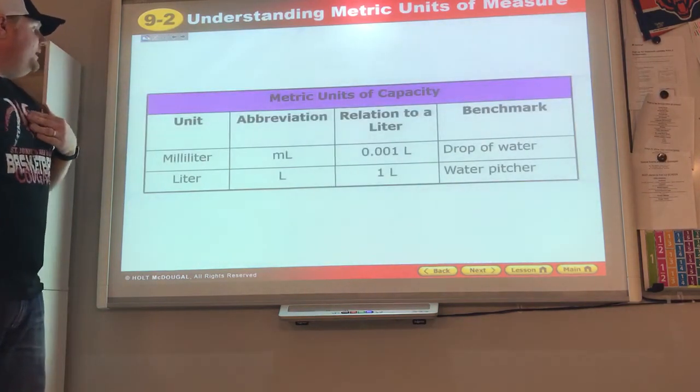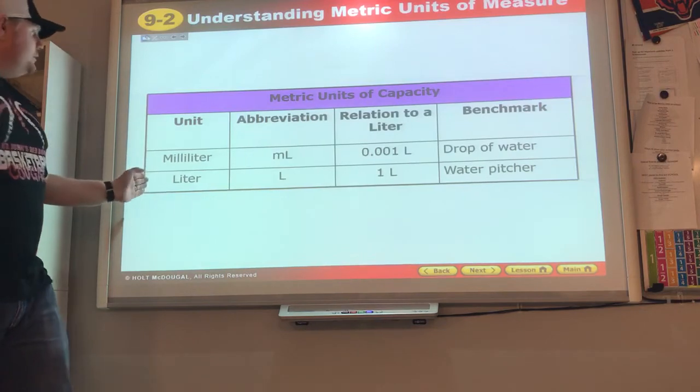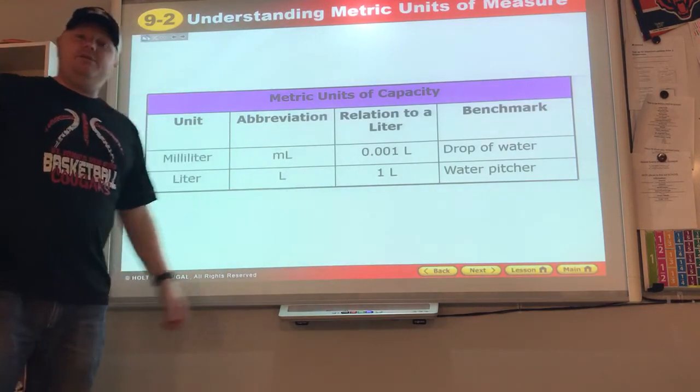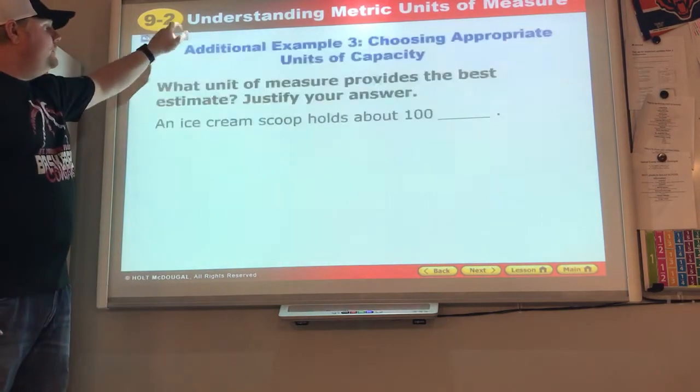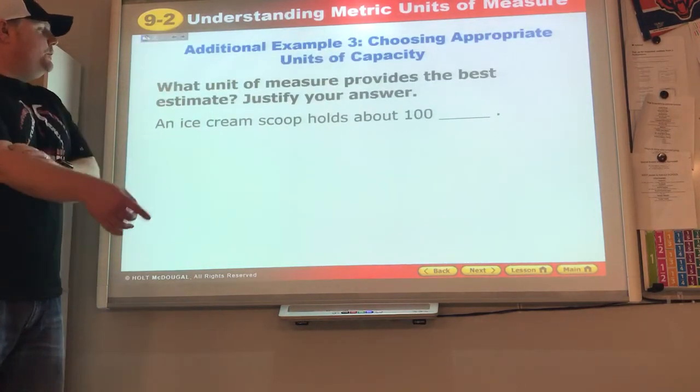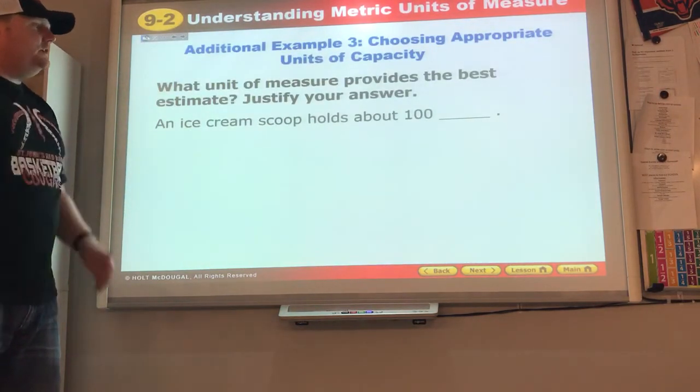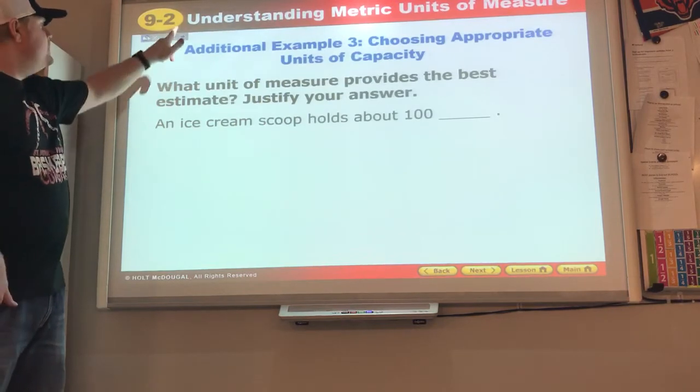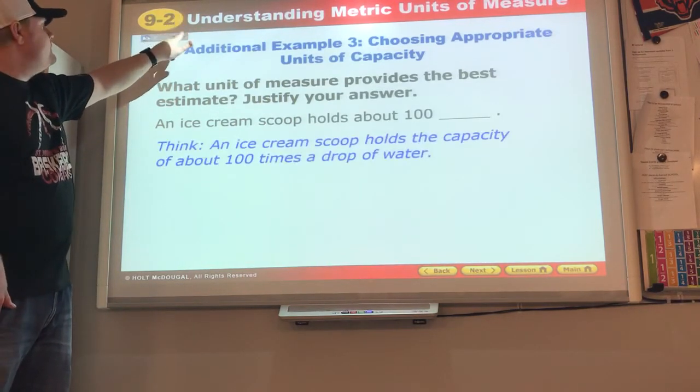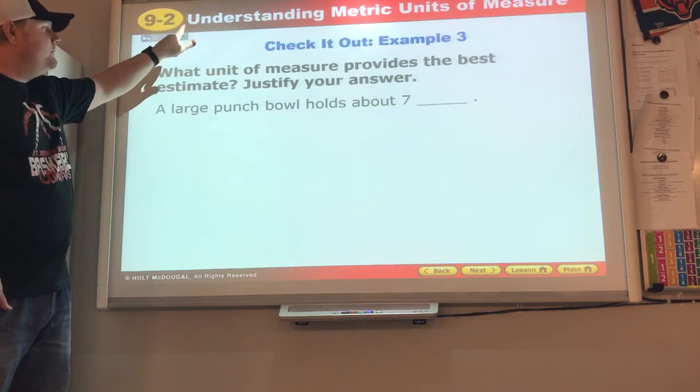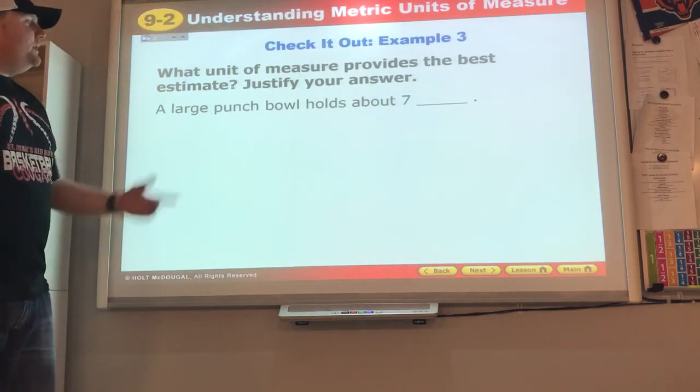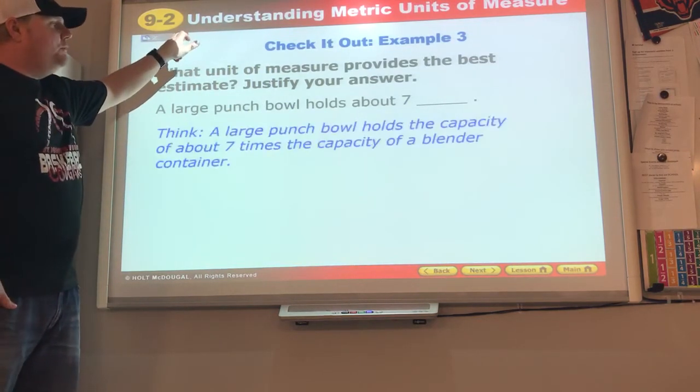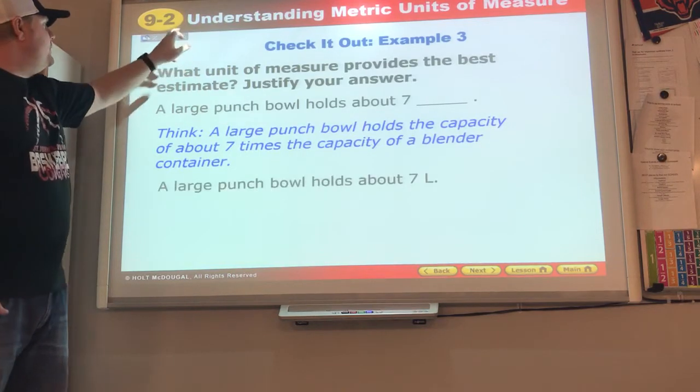Milliliter, liter - two-liter bottles of soda, well, half of those. When we think about that, an ice cream scoop holds about - a thousand, a hundred? It wouldn't hold about 100 half of those two liters, so I'd say it'd be milliliter. That'd be correct. A large punch bowl holds about seven - yep, that would be liters, thinking about your soda bottle.